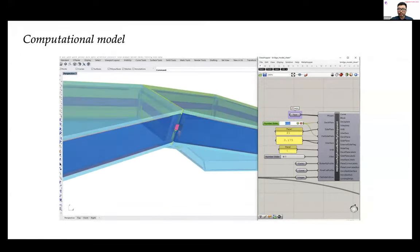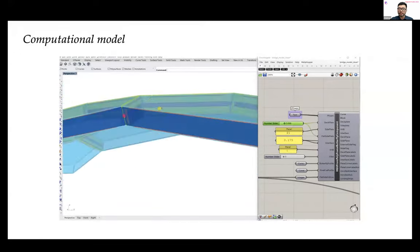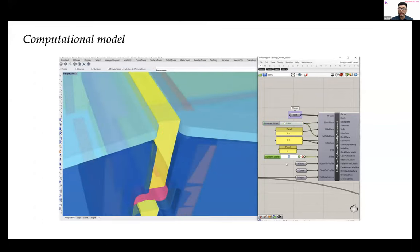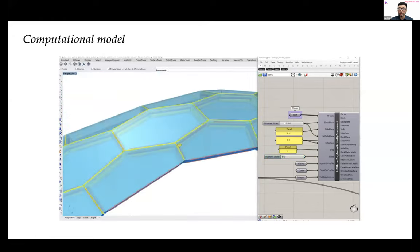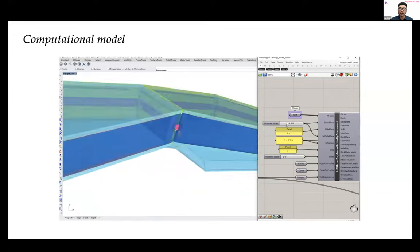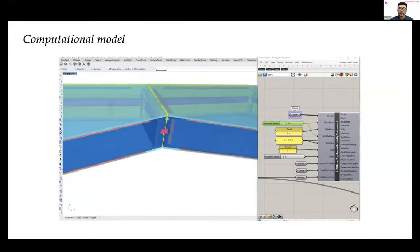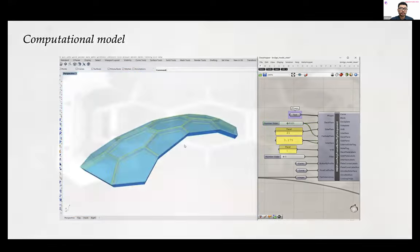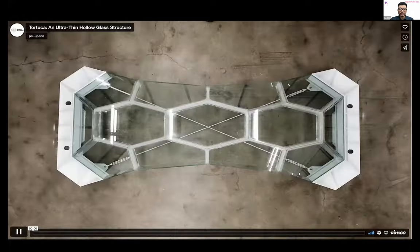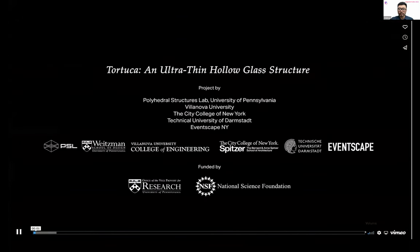Before moving to fabrication, we also implemented a parametric model where we can change design parameters and the whole model updates instantly. It helps a lot with design adjustments and fabrication management. Here we have a video that records the entire fabrication and construction process.